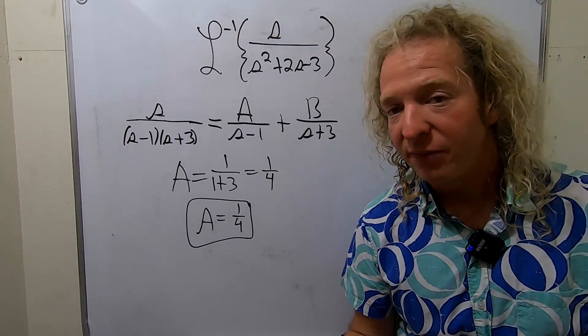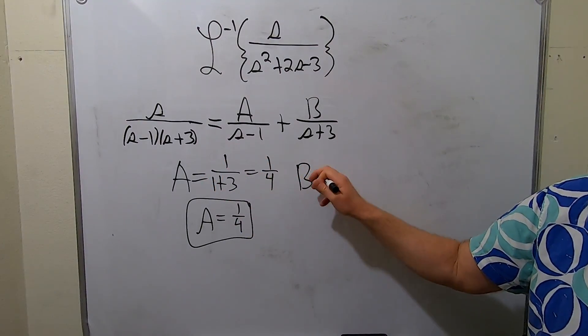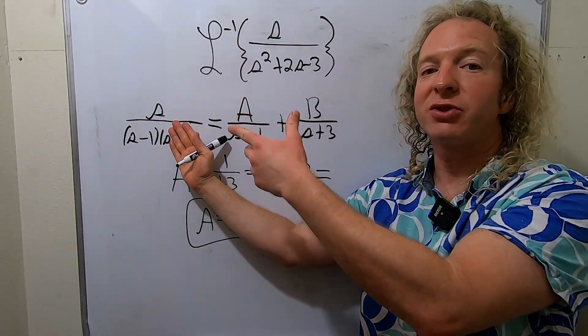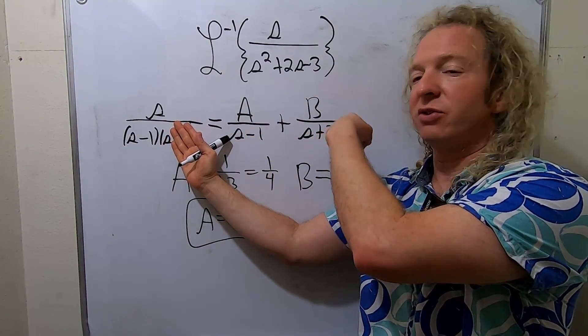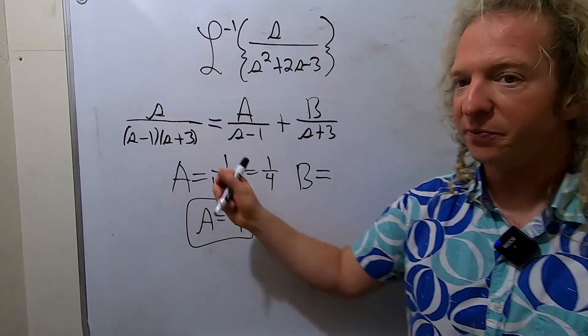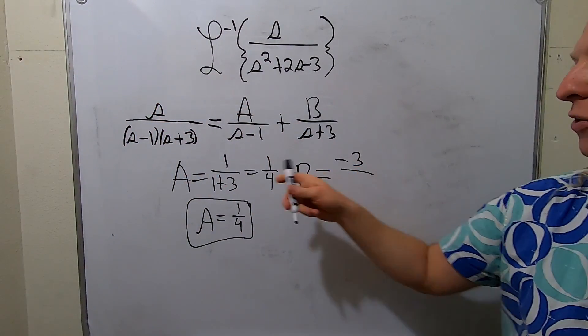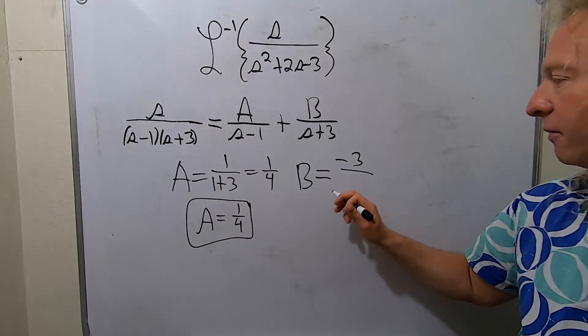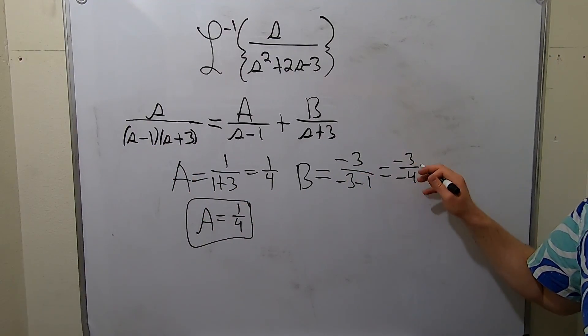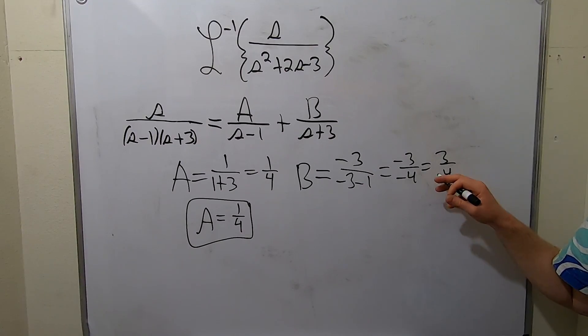To find B, you cover up what's under B. So you just go over here and cover up the S plus 3. And you ask yourself, what makes that undefined? So negative 3. So you plug in negative 3s into these S's over here. So it'd be negative 3 over negative 3 minus 1. So this is negative 3 over negative 4. This is equal to 3 fourths. So that's B.